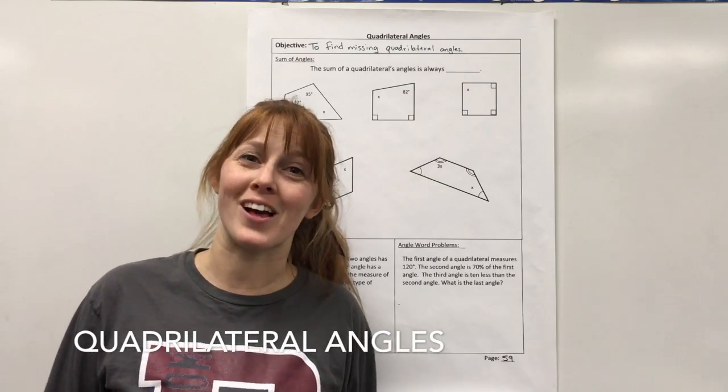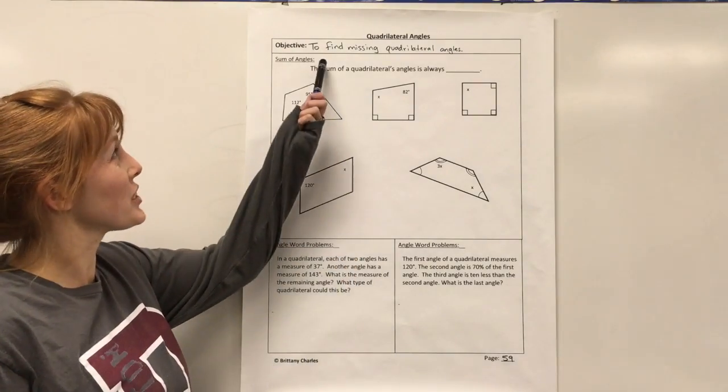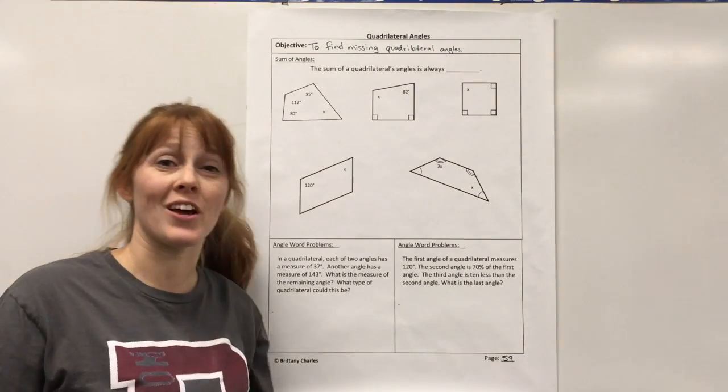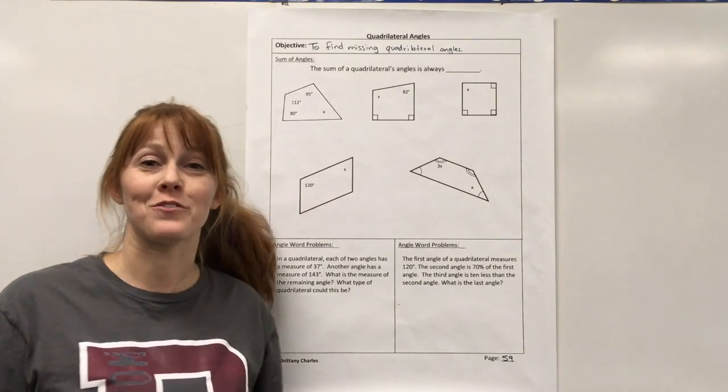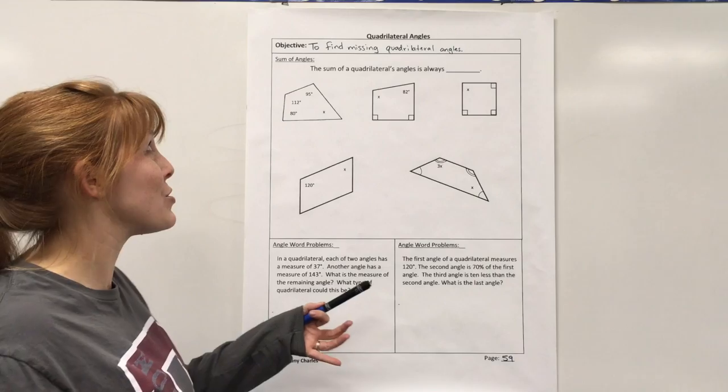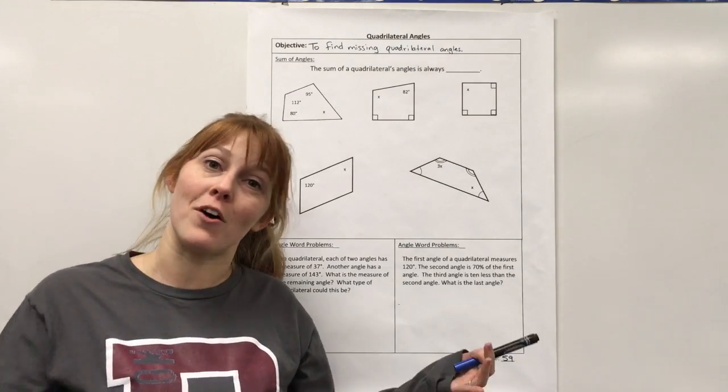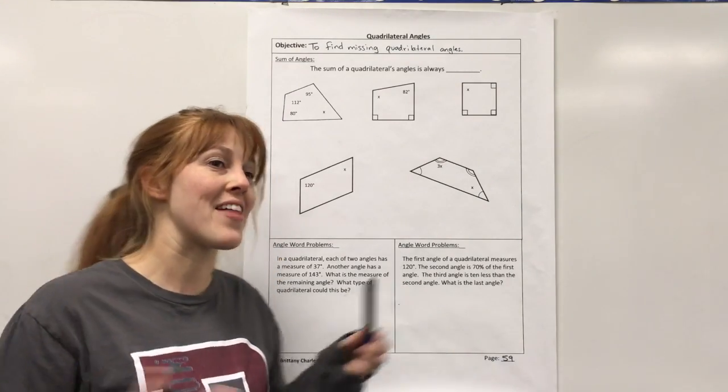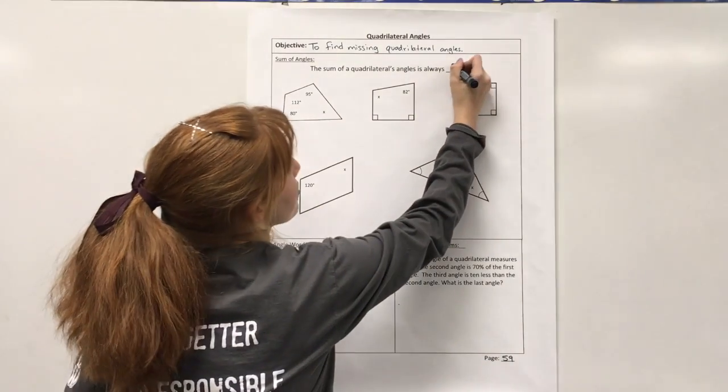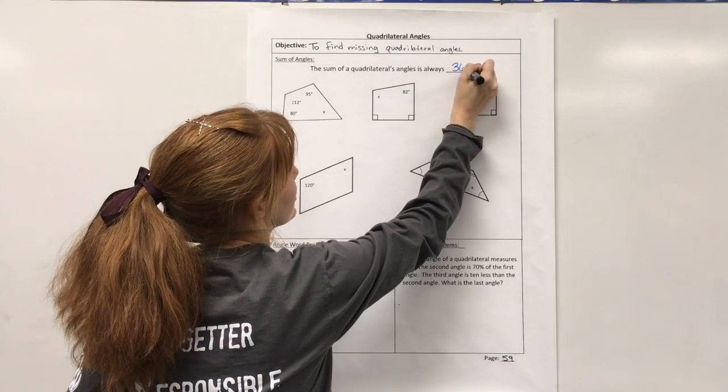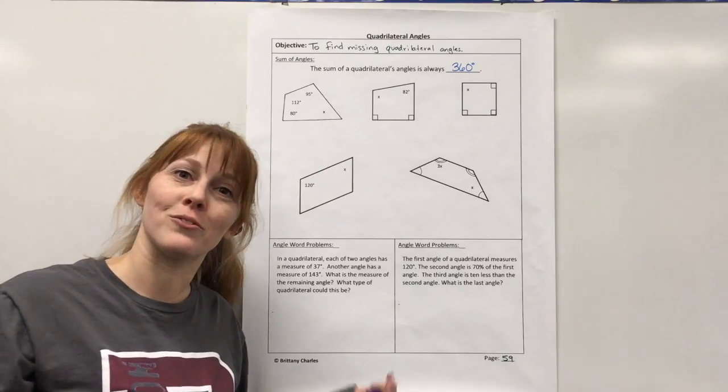Hey guys, today we're going to learn about quadrilateral angles. Our objective is to find missing quadrilateral angles, and this is page 59. The first thing you need to know is the sum of all the angles of a quadrilateral is 360 degrees, which happens to be the same number in a circle.